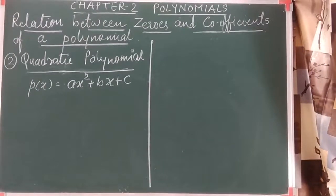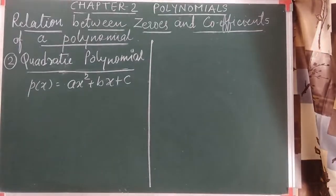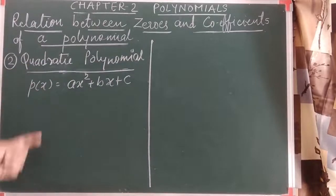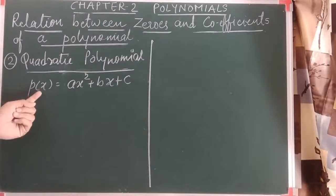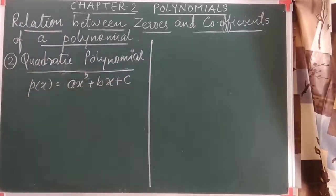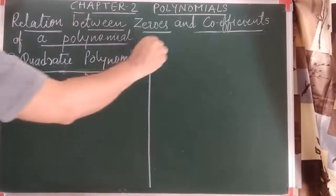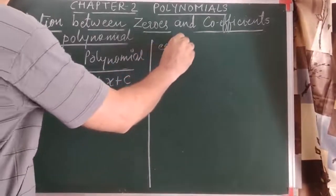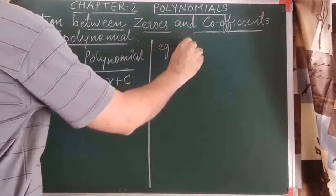Now let us see the same for the quadratic polynomial — the relation between the zeros and the coefficients of a quadratic polynomial. The standard form is p(x) = ax² + bx + c. Let us understand this with an example.